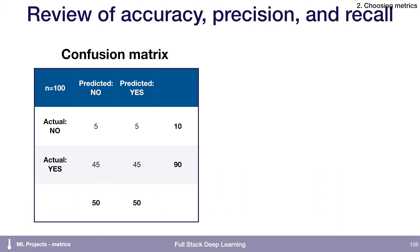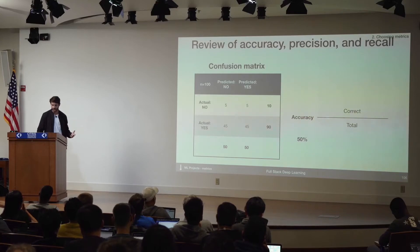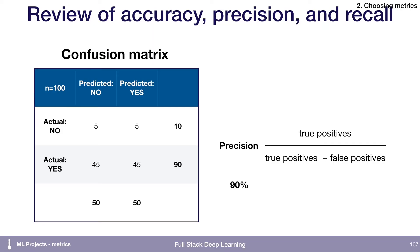To quickly review the difference between accuracy, precision, and recall: if you have a confusion matrix that compares when the answer was actually no and when you predicted no, then accuracy is the percentage you get correct. Precision is the number of true positives — the number of times you predicted true and it's actually true — divided by all the positives. Recall is the number of true positives divided by the number of times the answer was actually yes.